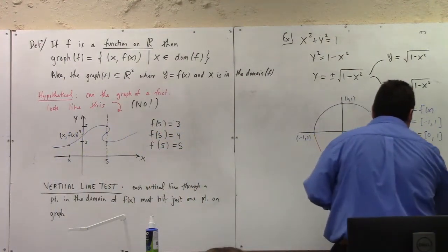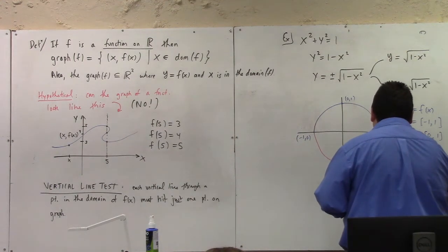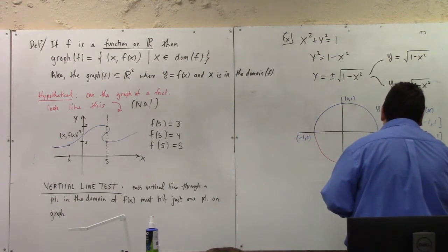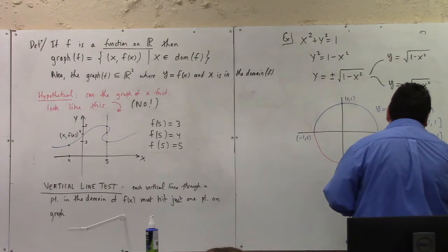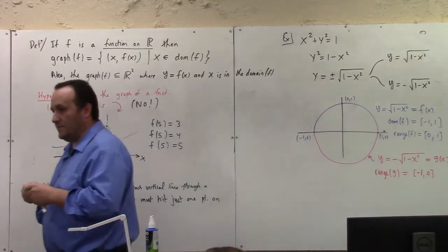So let me call this g of x since I don't want to confuse it with f. But the range of g would be minus 1 to 0. And they meet at the equator and glue together to give you the whole circle.